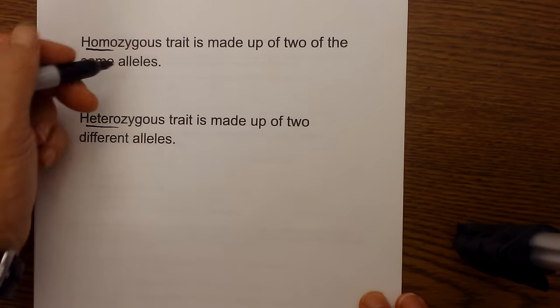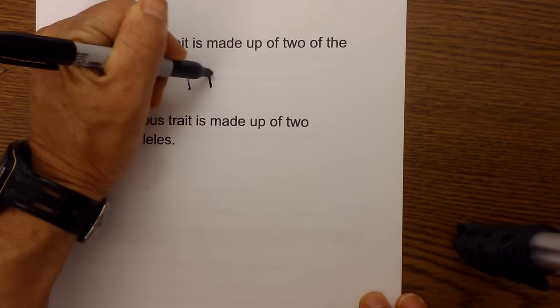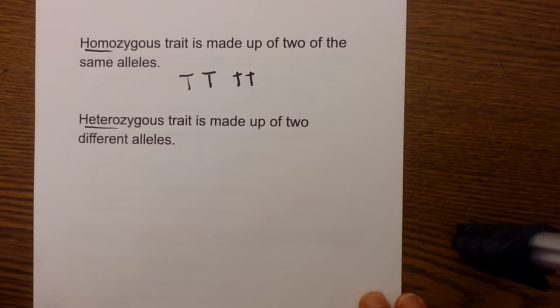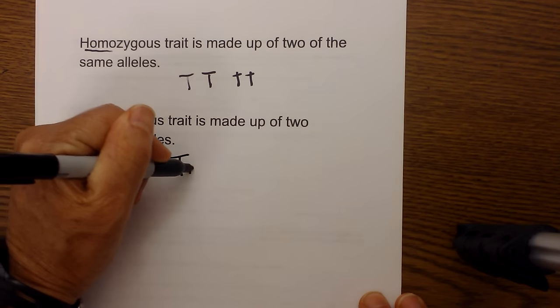So if I were to write these and use the letter T, a homozygous could be written big T, big T or little t, little t. And heterozygous would be written big T, little t.